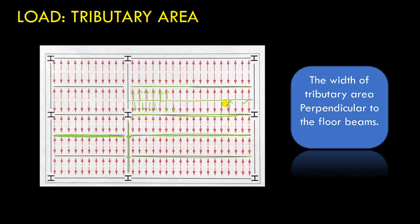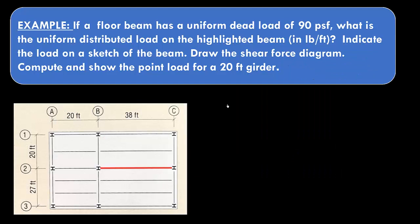Let us illustrate this load calculation using an example. If a floor has a uniform dead load of 90 pounds per square foot, what is the uniform distributed load on the highlighted beam? We have to calculate the dead load on this beam in pounds per foot, indicate the load on a sketch of the beam, draw the shear force diagram, and compute the point load on a 20-foot girder.